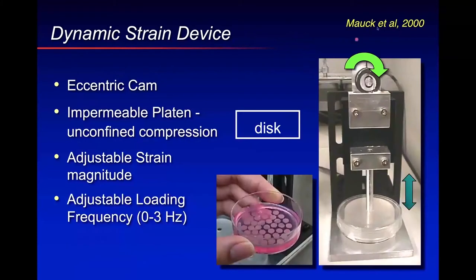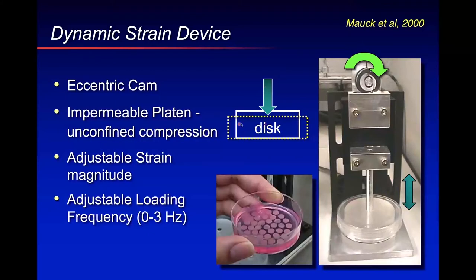When we started our tissue engineering studies with Rob Mock, a PhD student in our lab, we published our first study in 2000. We were relatively late comers — Gordana had been doing cartilage tissue engineering starting from the 1980s. We started with agarose as our hydrogel seeded with chondrocytes at 10 million cells per ml. We said from the outset that it's important to dynamically load the constructs to promote lateral expansion, because collagen resists tension, not compression.